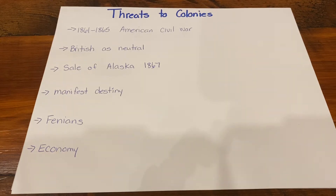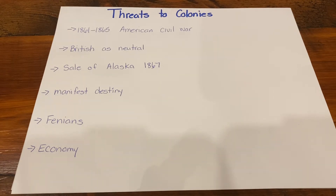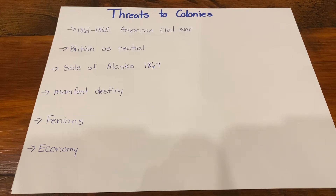For this video I'm going to be talking about the threats to the Canadian colonies. In 1861 to 1865 the Americans were involved in a civil war. The Civil War was the northern states fighting against the southern states. They were in a conflict over the legalities around slavery.